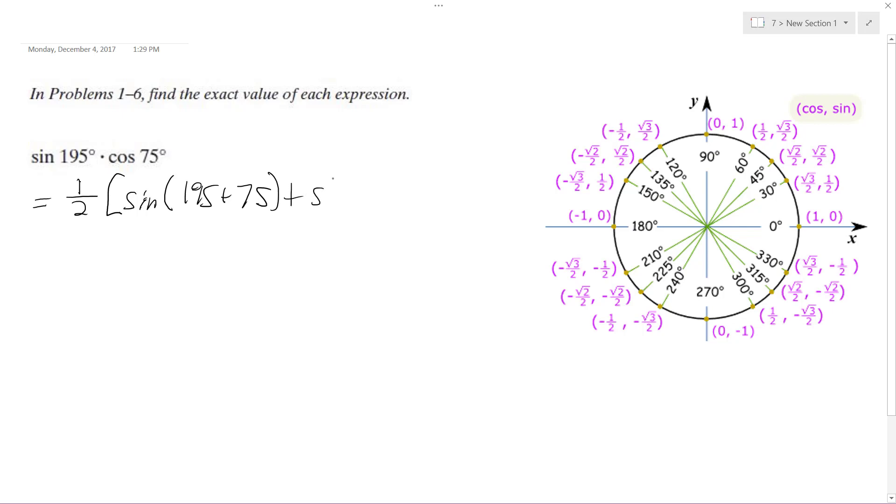sine of 195 minus 75. This is from sine a... excuse me, this should be sine a sine b or cosine b. This is a formula for that. Okay, so what this ends up being is one half